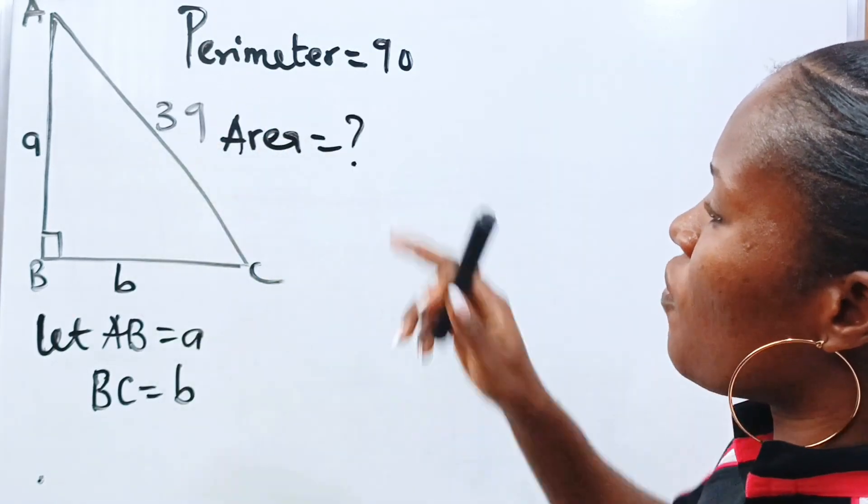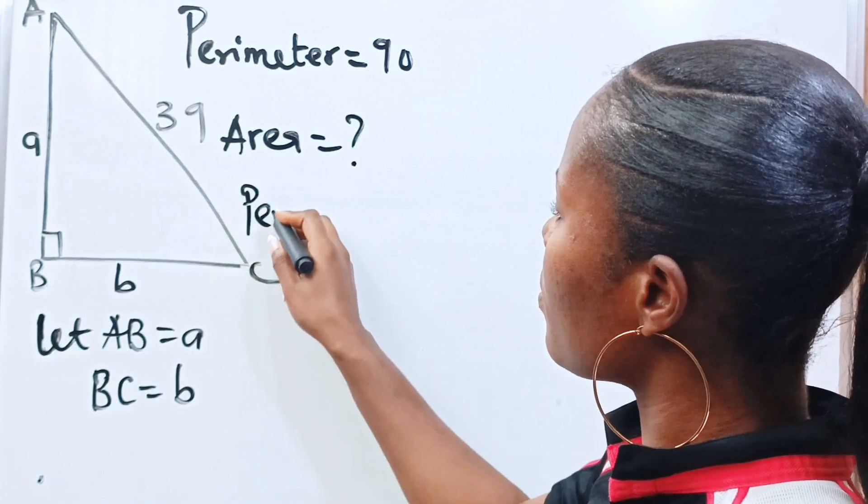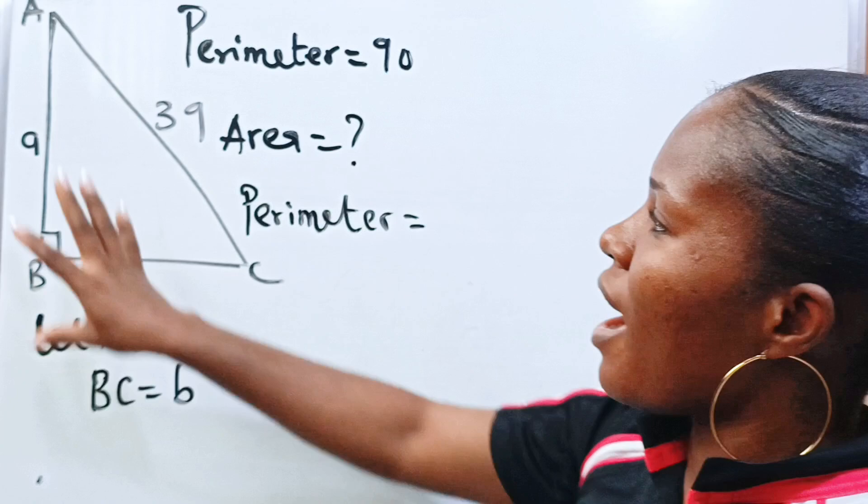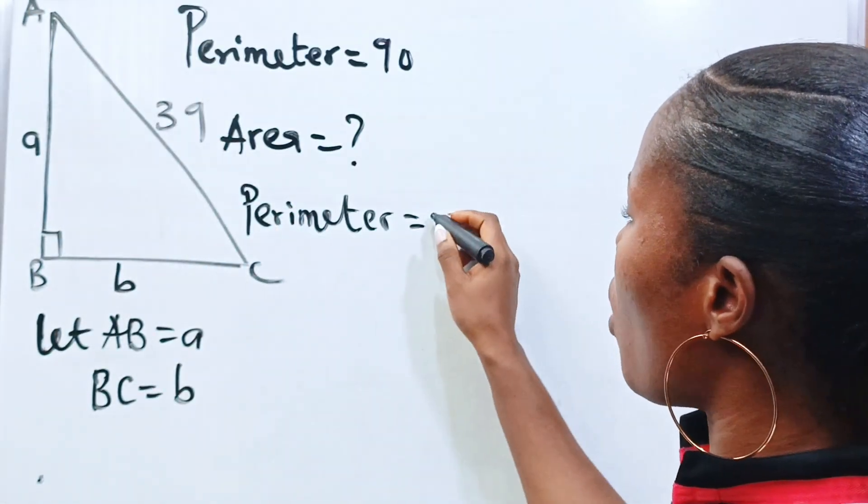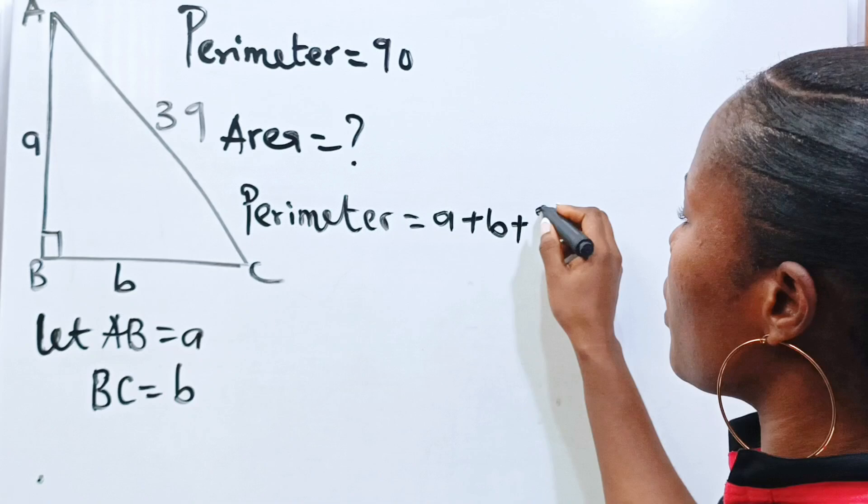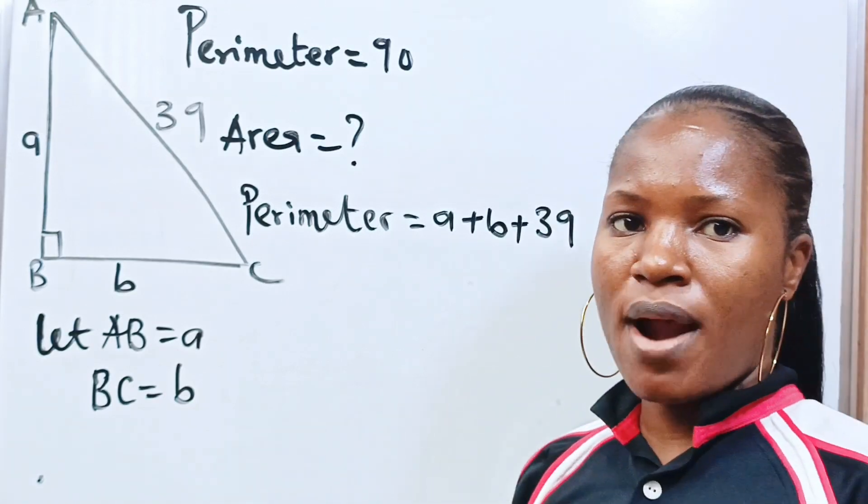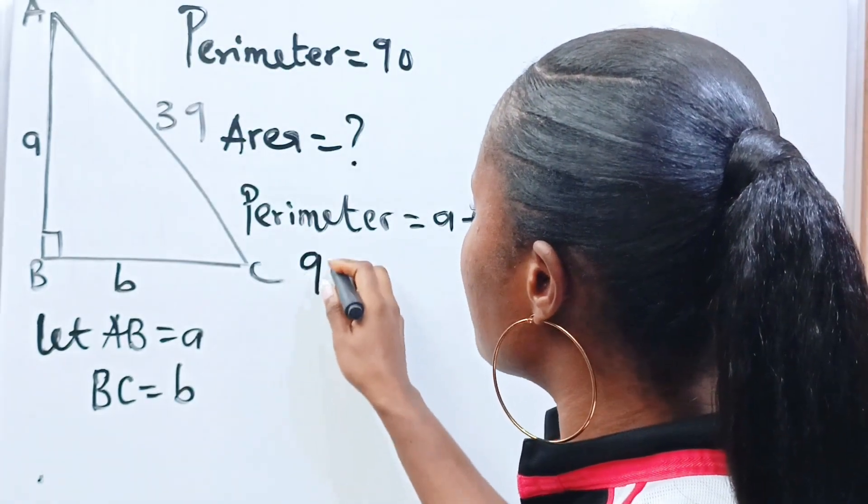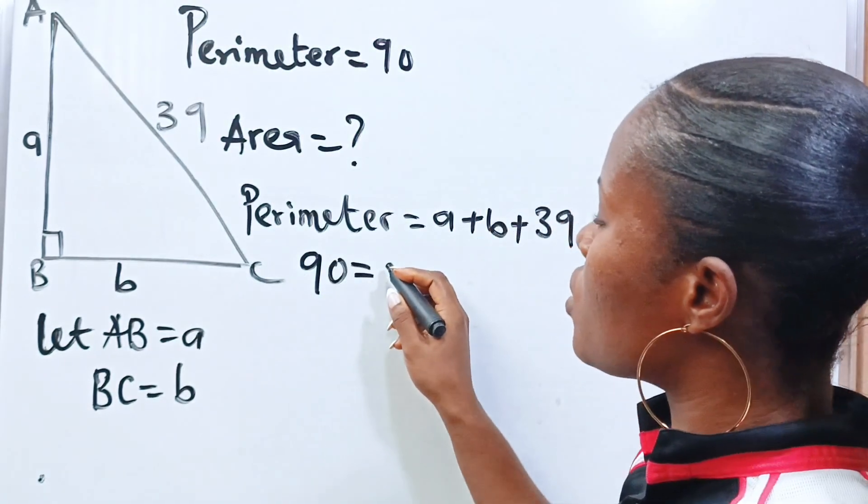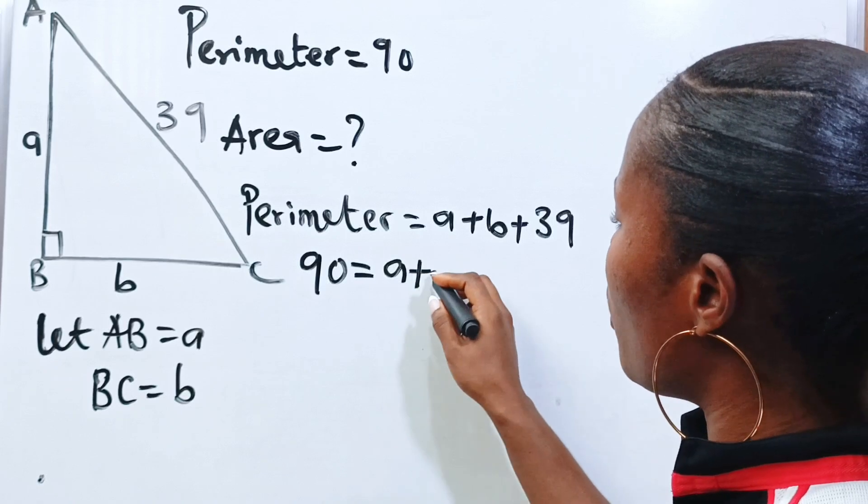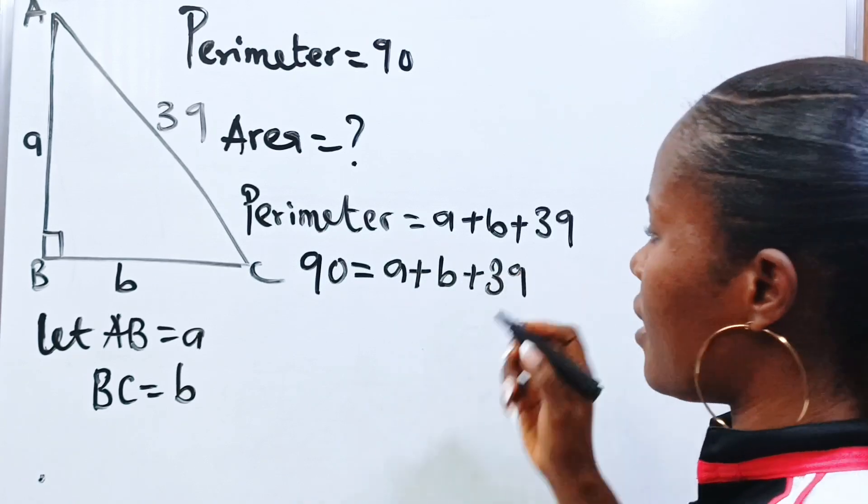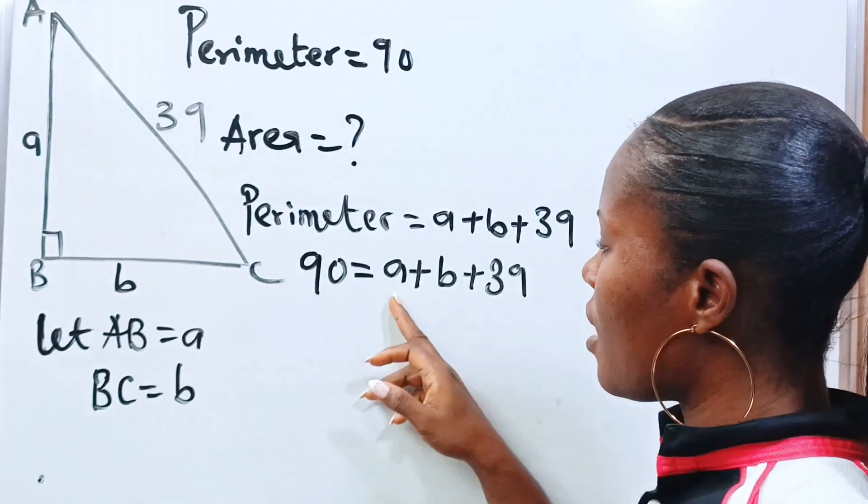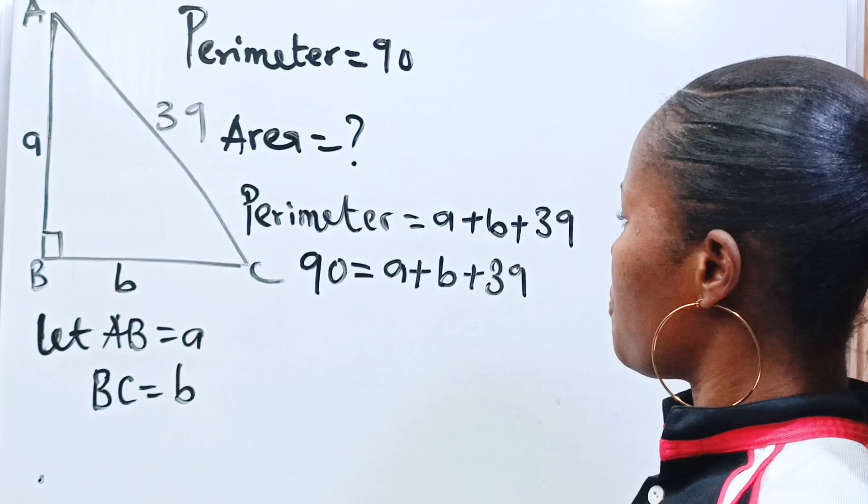Now, the perimeter of this triangle then is going to be equal to A plus B plus 39. But the perimeter is already giving us 90. So we have 90 is equal to A plus B plus 39. You can see that we don't have anything to find there except A plus B. Let's go ahead and find that.